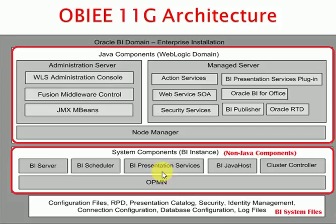Presentation Services is a major service. It communicates with your BI Server, reads your RPD, and displays your reports in the browser. Answers and dashboards all work on Presentation Services. Java Host is another component mainly related to graphs — if you have a report with graphs, the Java Host service takes care of rendering them.